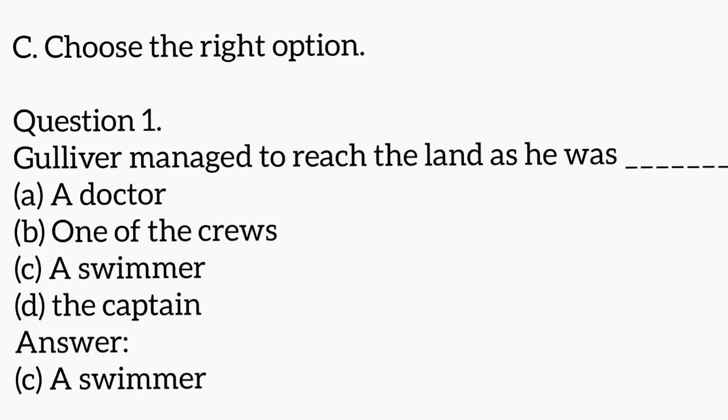Next one, choose the right option. Question number one, Gulliver managed to reach the land as he was. Options are A, a doctor. B, one of the crews. C, a swimmer. D, the captain. The answer is swimmer. Because he knows the swim, he can reach the land.